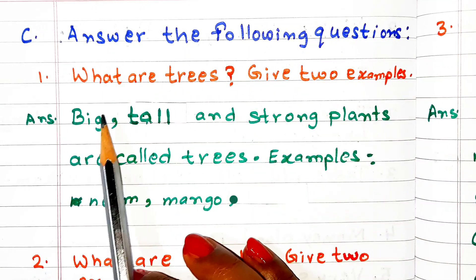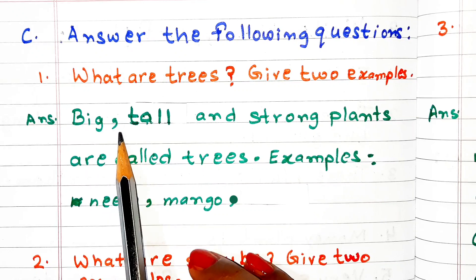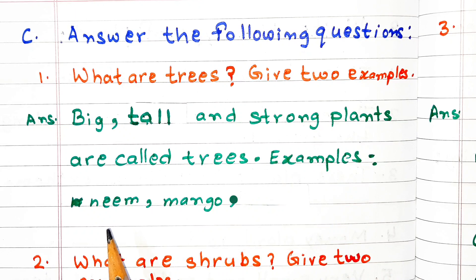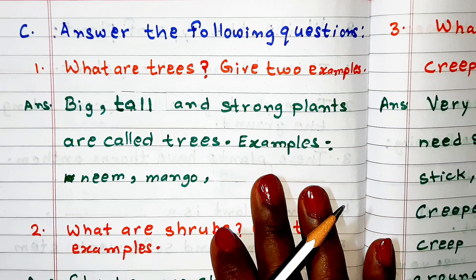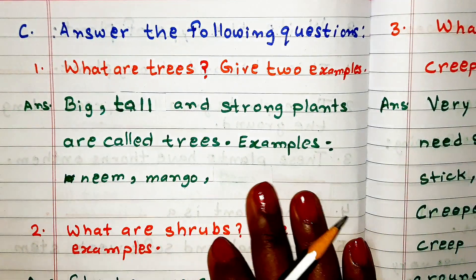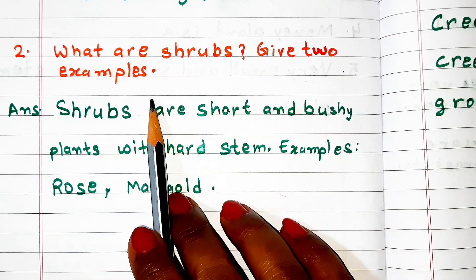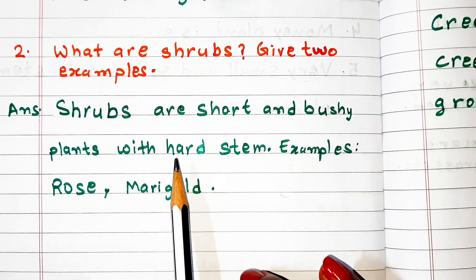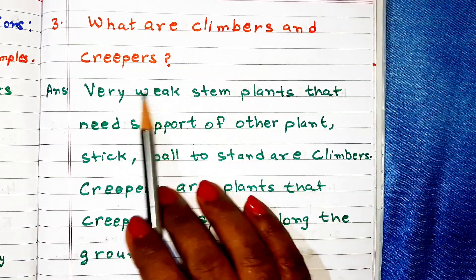Answer the following questions. What are trees? Give two examples. Answer: big, tall, and strong plants are called trees. Examples: neem, mango. If you are liking this video then like and comment, and if you find it helpful share it with someone who needs it. What are shrubs? Give two examples. Answer: shrubs are short and bushy plants with a hard stem. Examples: rose, marigold.